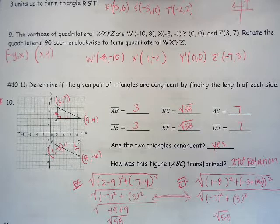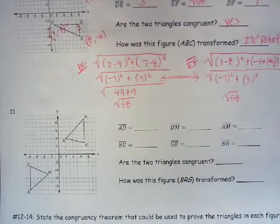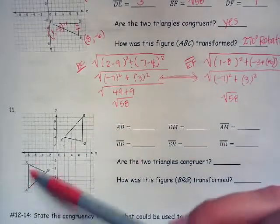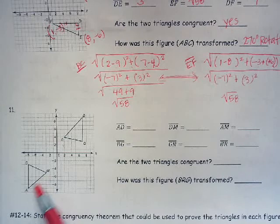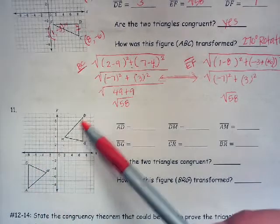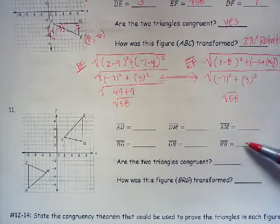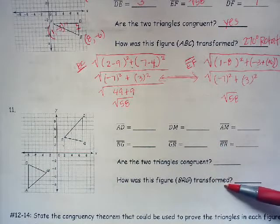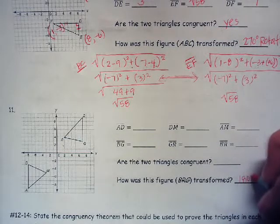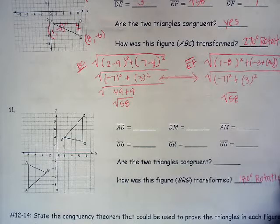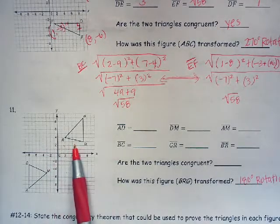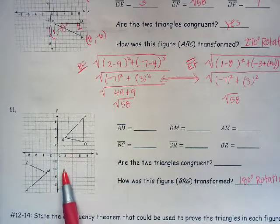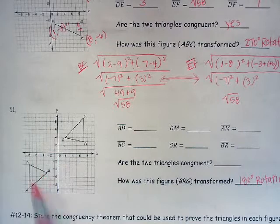Number 11 does the same thing as number 10, so I'm not going to redo this one on the video. You'll find two countable distances and use the distance formula for the remaining sides to see if they're all the same. I'd recommend you still practice that even though I'm not doing it here. The transformation is a 180-degree rotation — it's not a rigid translation, not a reflection over the X or Y axis, so it's a rotation of 180 degrees.